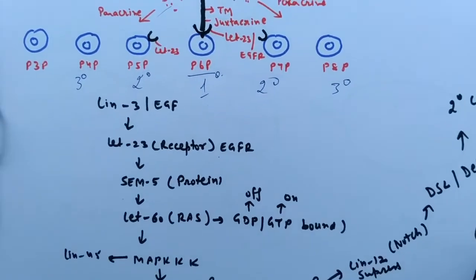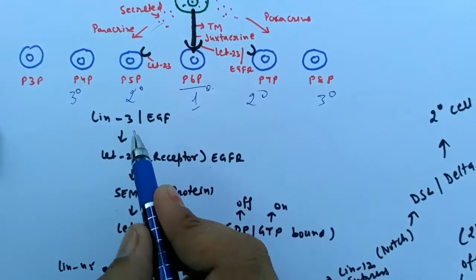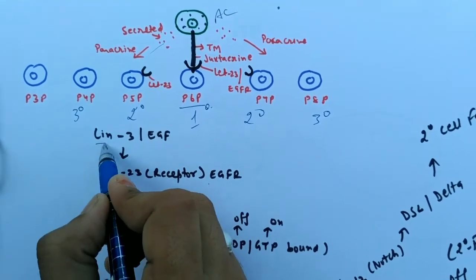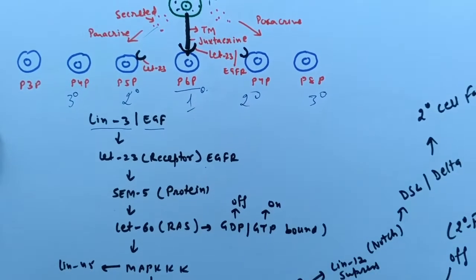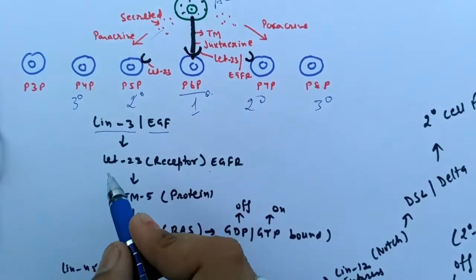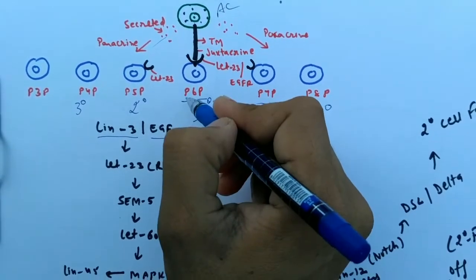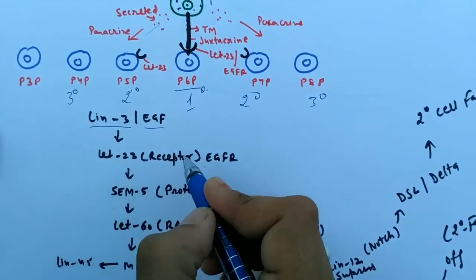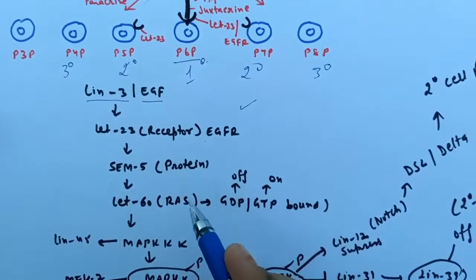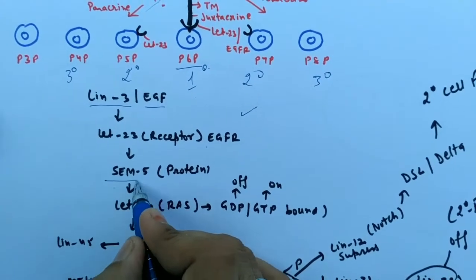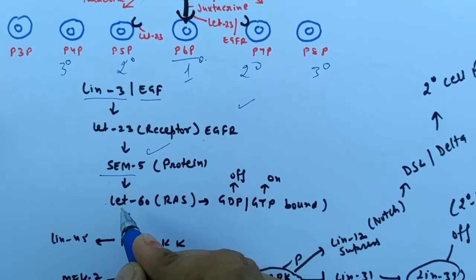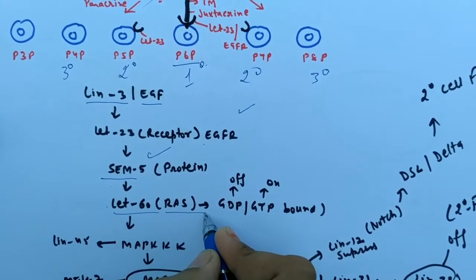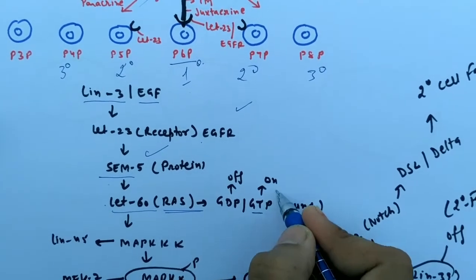In the inner cell, first the anchor cell secretes the LIN-3 protein. In higher organisms it is called epidermal growth factor. It binds to the LET-23 receptor on P6P and other cells. Here you have to see LIN-3. On reaching inside the cell, it activates SEM-5, then it attaches with LET-60, a RAS-dependent kinase that is activated when GTP is bound.